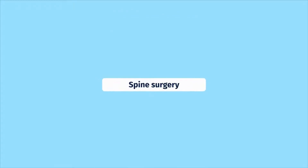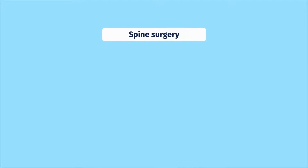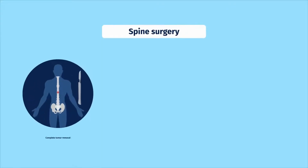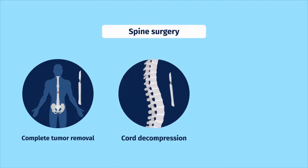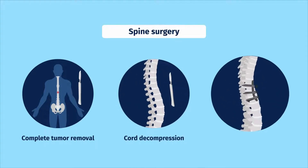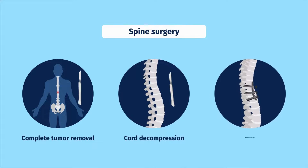Surgery is typically indicated for one of the following reasons: first, to completely remove a primary tumor; second, to decompress the spinal cord or nerve roots; and third, to stabilize an unstable spine.